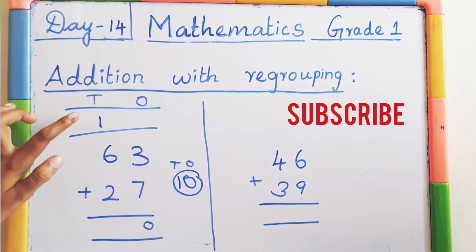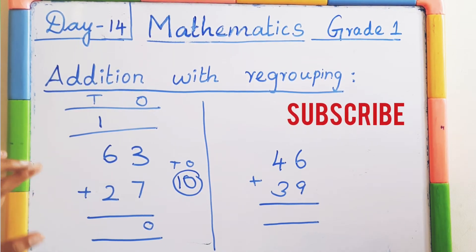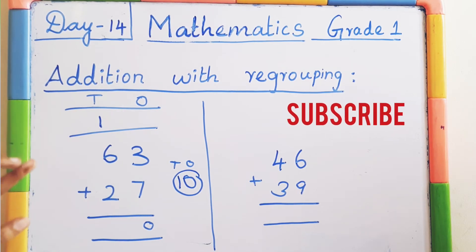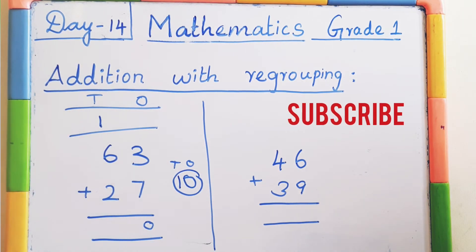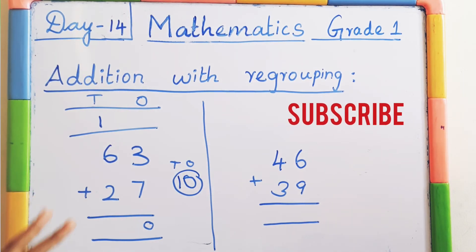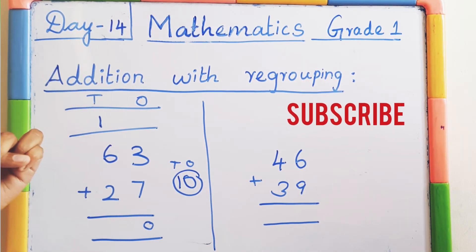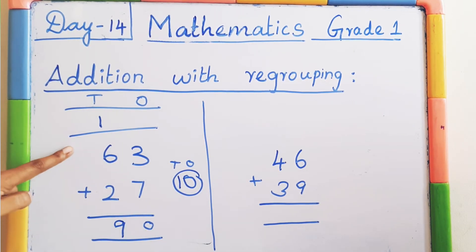Immediately add that carry over number to the tens place number, otherwise you will forget. So immediately add this 1 to the 6. So 6 plus 1 equals 7. Keep 7 in the mind, 2 on the finger. After 7: 8, 9. The answer is 90. So 63 plus 27 equals 90. Very good.